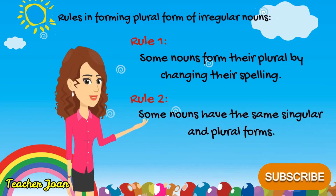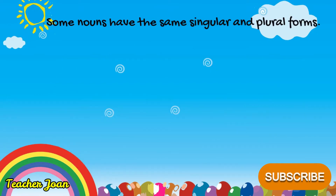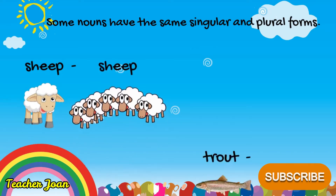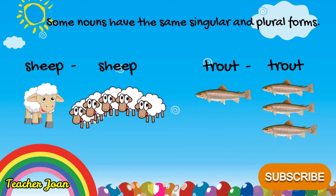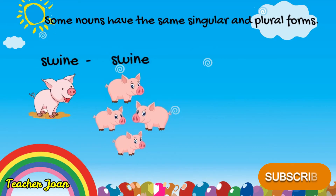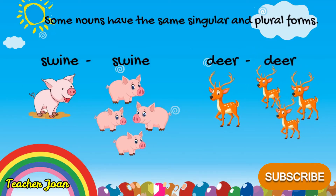Some nouns have the same singular and plural forms. Here are some examples: Sheep — Sheep, Trout — Trout, Swine — Swine, Deer — Deer.